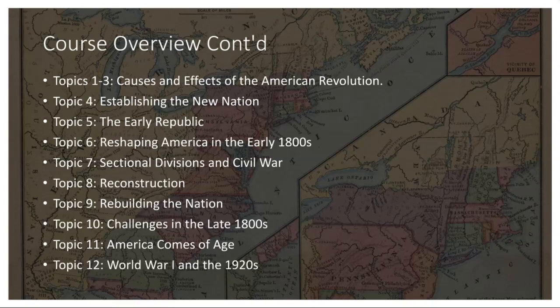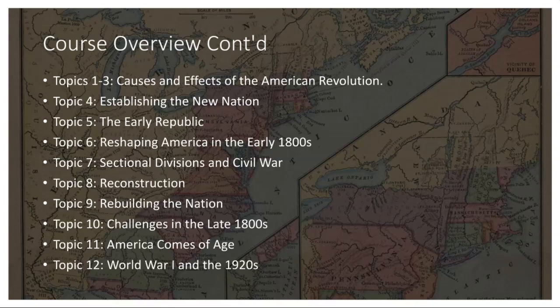In Topic 5, the issue of slavery became increasingly contentious, with deep divisions between the North and the South. The Missouri Compromise, the Compromise of 1850, and the Kansas-Nebraska Act attempted to address these tensions but ultimately failed to prevent conflict. The election of Abraham Lincoln in 1860 triggered Southern secession and the Civil War. The war's devastating impact eventually led to the Emancipation Proclamation and the abolition of slavery.